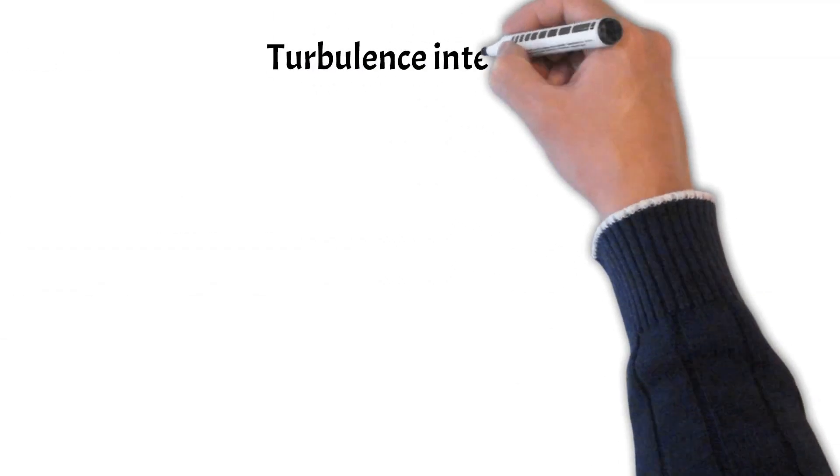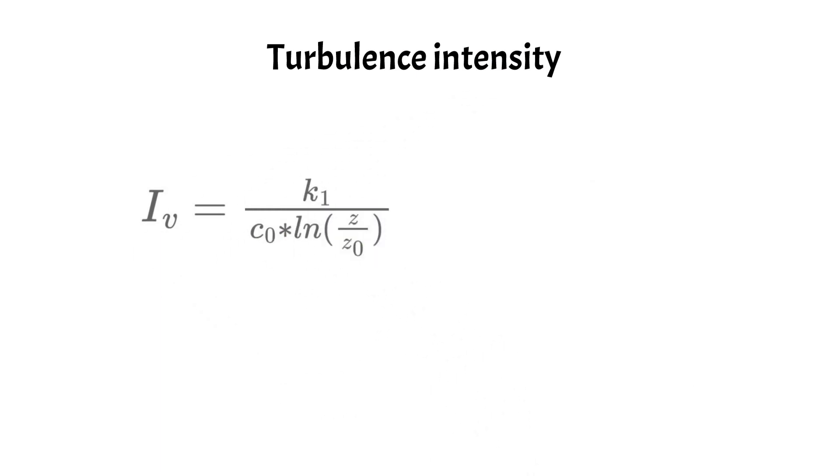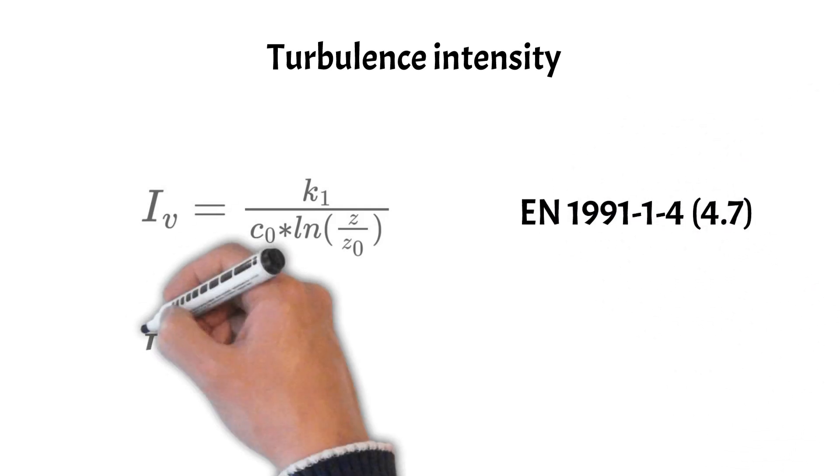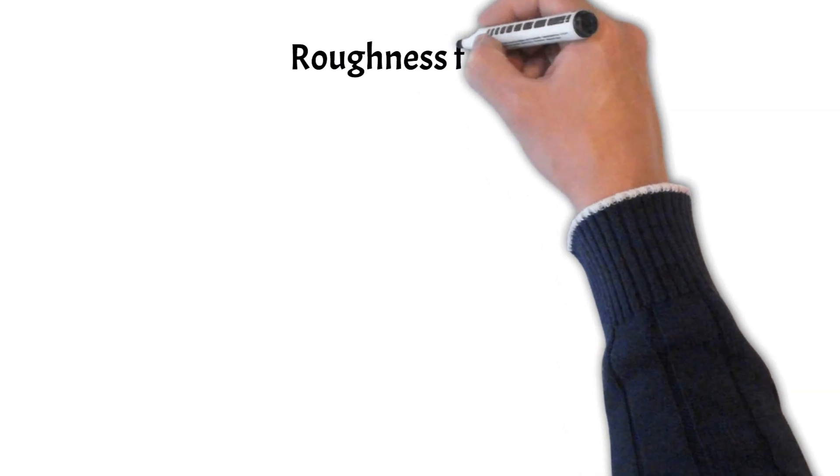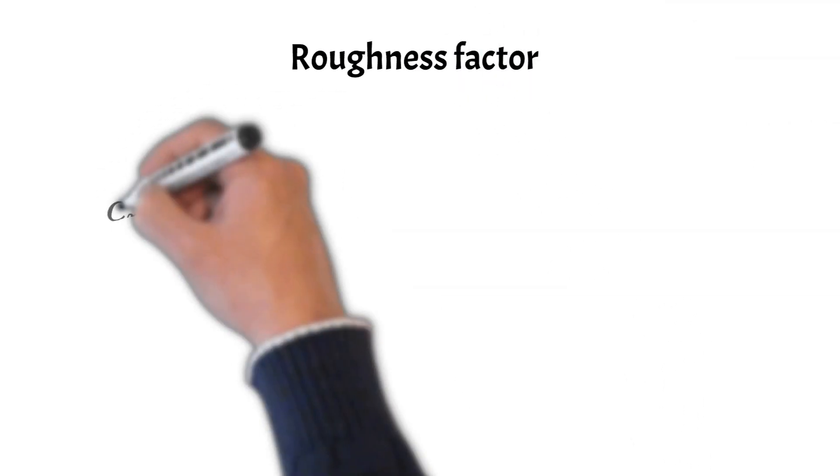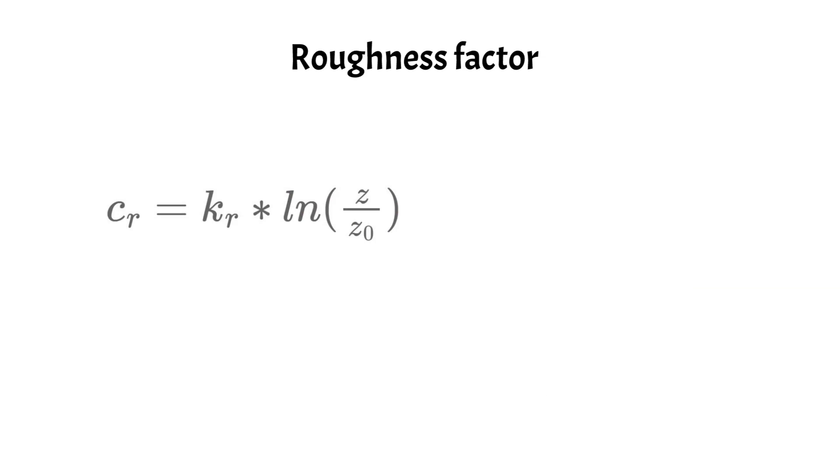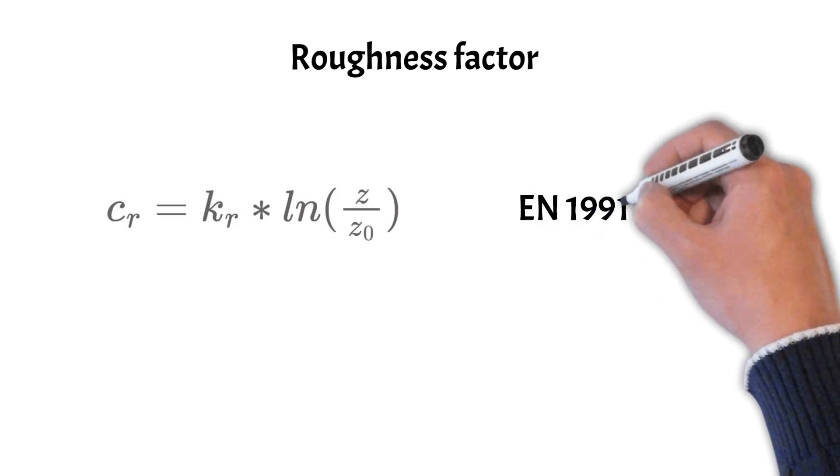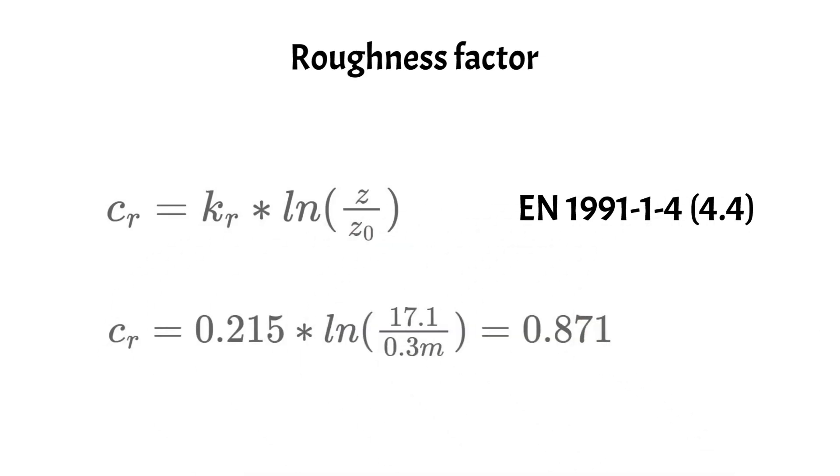The turbulence intensity is calculated next as K1 divided by Z0 times ln of Z divided by Z0. Inserting the values we know gives a result of 0.247. We move on to the roughness factor CR which is calculated as CR equals to KR times ln of Z divided by Z0. This leads to a value of CR of 0.871.